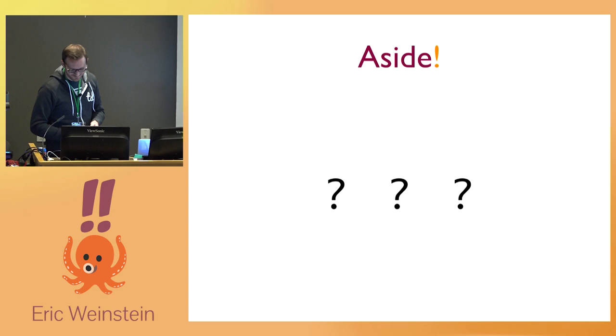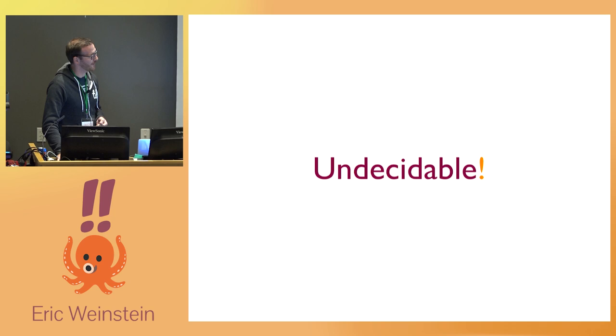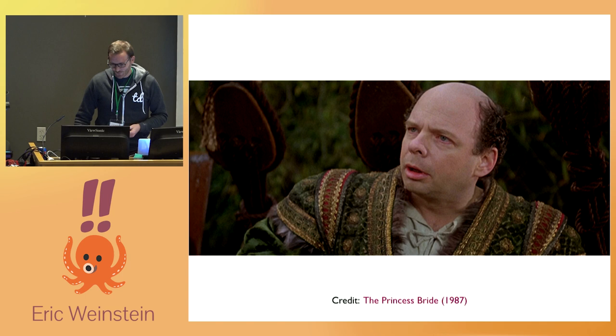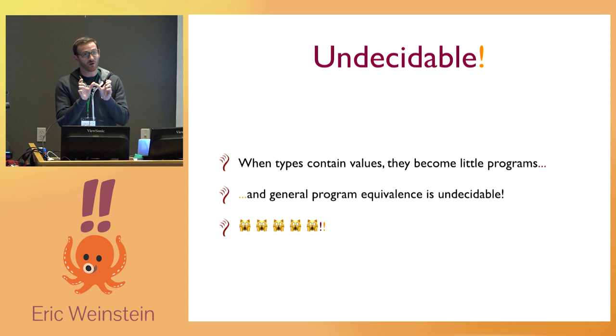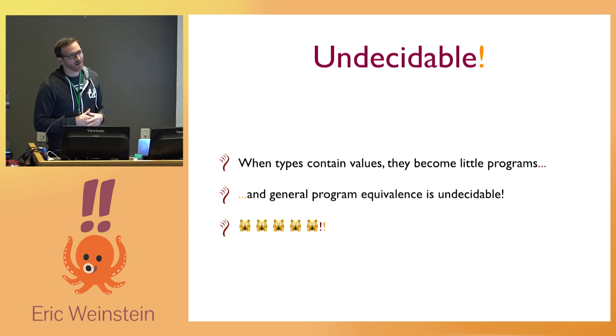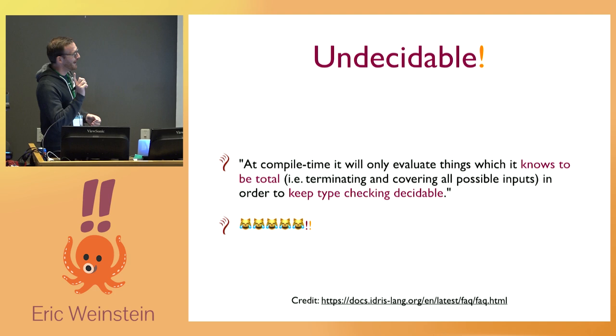Very quickly, we're going to talk about undecidability in type theory. When types contain values, they can become little programs. And if you have two little programs and generally want to know if those two programs are going to do the same thing for all possible inputs, that is actually undecidable — which is super scary. Luckily, like we talked about with totality, you can tell Idris to yell at you if something is not total. At compile time it's only going to evaluate things it knows are total already, which means type checking remains decidable, and everybody is happy.